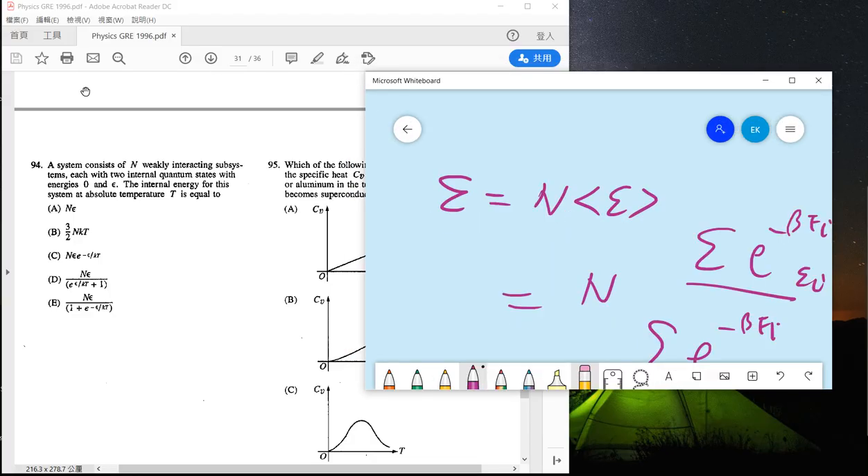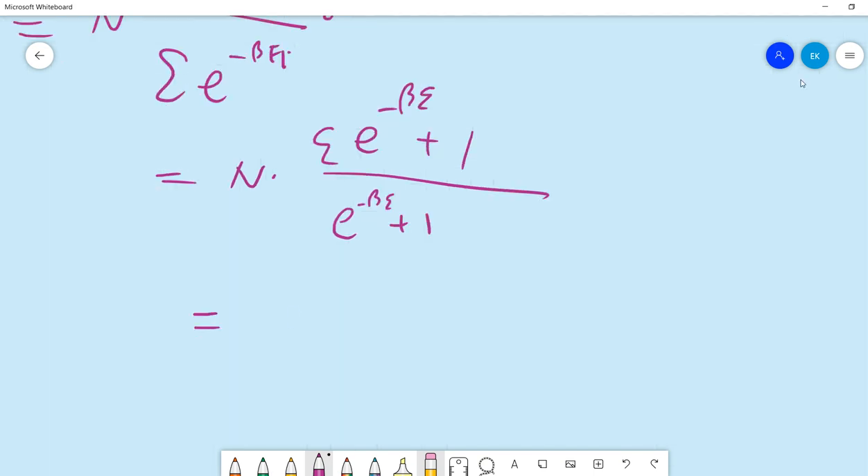Average, so n times... and this is basically you have two energy levels, one is zero, one is epsilon, so you have plus one. So what you have is n times, this is zero, this is energy zero, so basically you just have epsilon times e^(-ε/kT) divided by 1 plus e^(-ε/kT). So the answer is D.